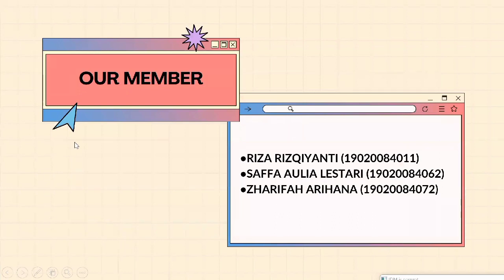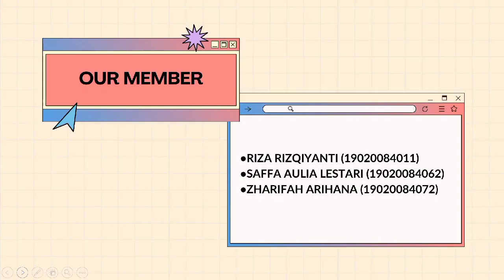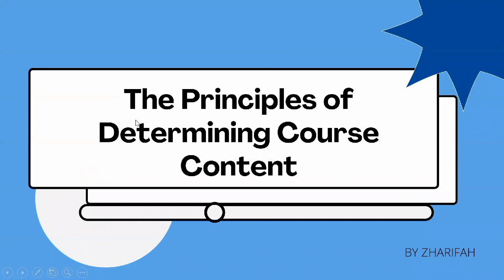First, Riva Ristianti. Second is Safa Aulia Lestari. And me, Zarifa Arihana. So we are going to explain relating to the principles of determining course content, types of approaches to course design, and last but not least, we are also going to talk about the ways of evaluating courses and materials. And let's go to the first topic, the principles of determining course content.